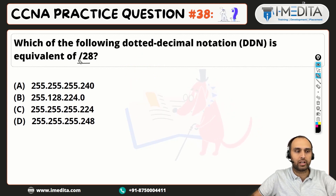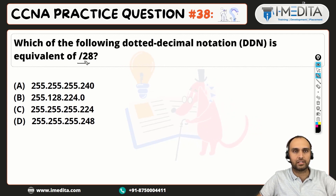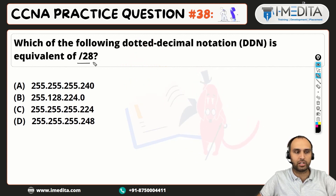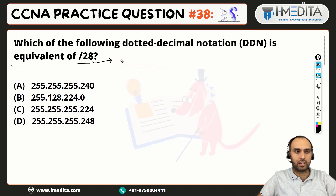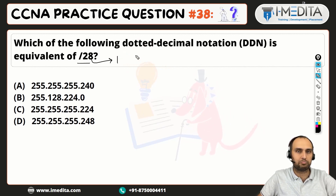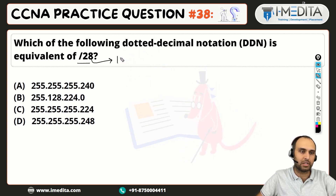We have given this subnet mask in the slash CIDR notation and we need to write it in dotted decimal notation. The first octet will be — slash 28 means how many ones are in the subnet mask.